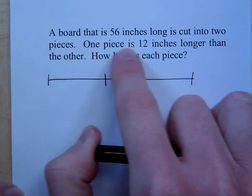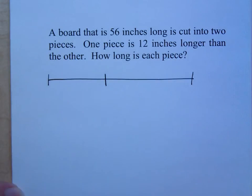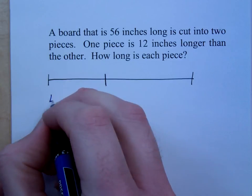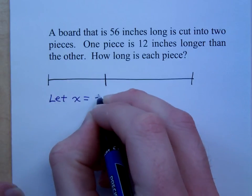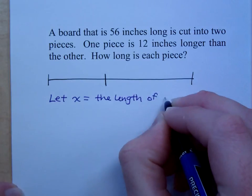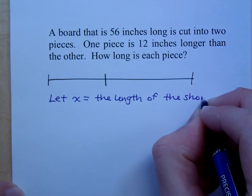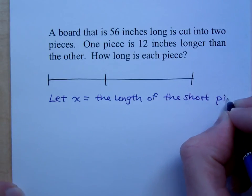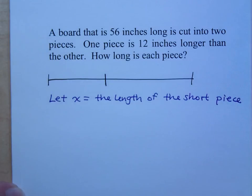Now, when you read this, the piece that's 12 inches longer, you know something about him. So, when it comes to defining your variable, you will always define it based on the thing you know nothing about. In this problem, I know nothing about this guy, so I will say this, let x equal the length of the short piece. Don't you even dare say that x is the short piece. It's not. It's the length of the short piece.